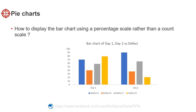We often collect data about process issues. For instance, we want to examine the relative frequency of different types of issues across two days — day one and day two. The issues are classified into one of four categories: defect A, B, C, and defect D. Looking at the chart, day one clearly has more defect D than day two.